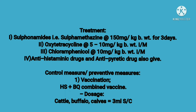For treatment: First, sulfonamides — sulfamethazine at the rate of 150 mg per kg body weight for three days; sulfadimidine is the drug of choice. Second, oxytetracycline at the rate of 5 to 10 mg per kg body weight IM. Third, chloramphenicol at the rate of 10 mg per kg body weight IM.